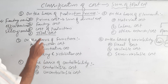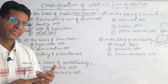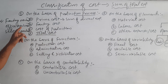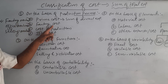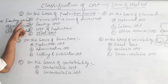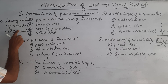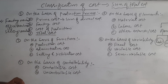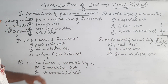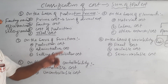Prime cost plus factory overhead plus office overhead is known as cost of production. This is a very important step. Cost of production is the sum of prime cost, factory overhead, and office overhead. If there is opening and closing stock of work in process, we have to add or deduct it in factory cost. Opening stock of work in process we have to add in factory overhead. And if there is opening stock and closing stock of finished goods, then after calculating the cost of production, opening stock we have to add and closing stock we have to deduct.